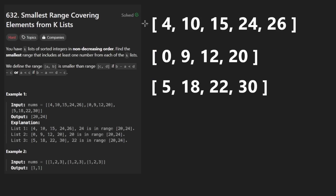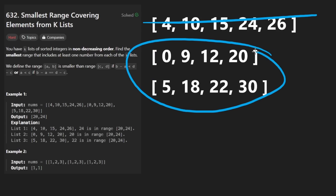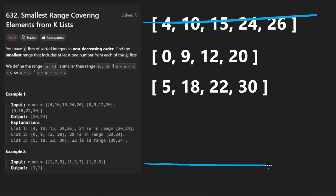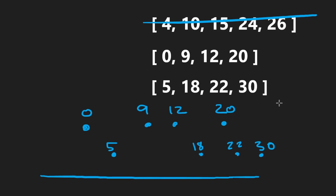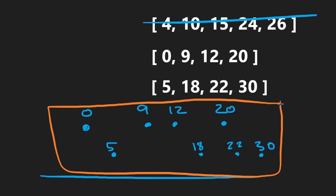Let's take a look at these two lists and try to visualize them. I'm going to draw these numbers out on a line. So I'll have zero, nine, twelve, and twenty from one list, and five, eighteen, twenty-two, and thirty from the other.